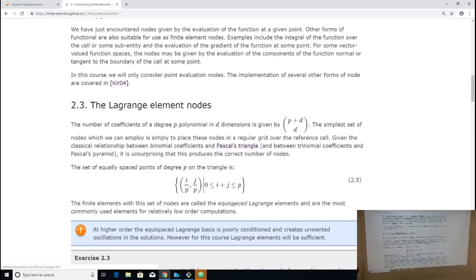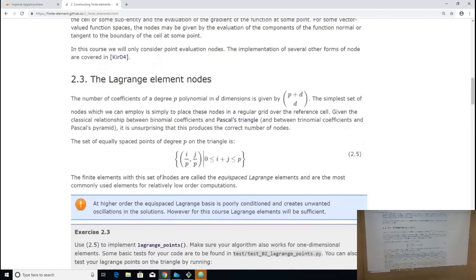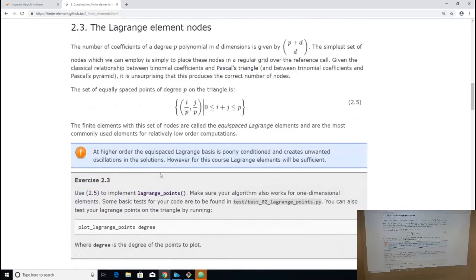The ones we're going to be interested in are the ones that define what are called the Lagrange elements. This is basically the simplest set of points that define a polynomial space on a simplex.